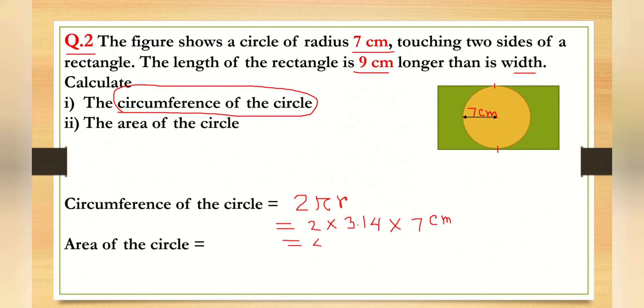So multiplying gives us 44.0 centimeters. That is the circumference of the circle — we got our first answer.